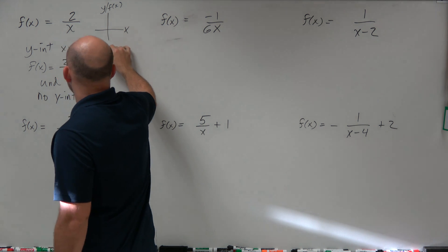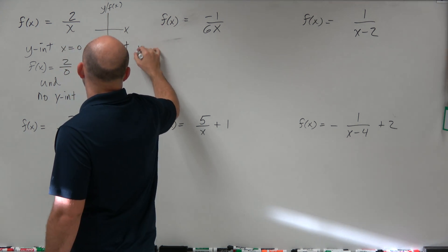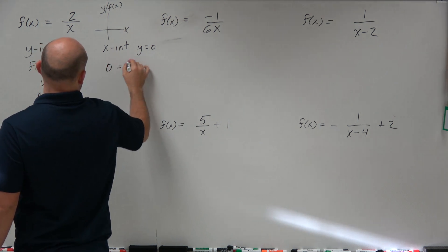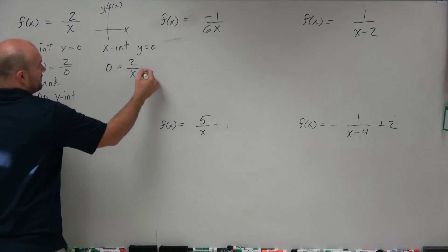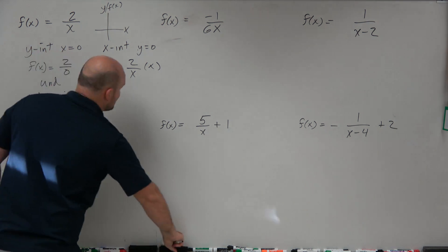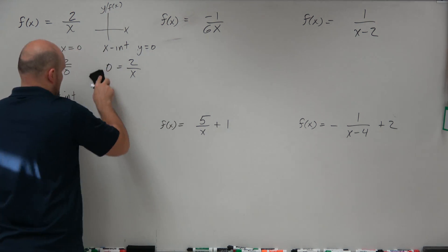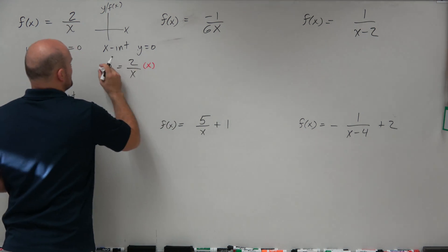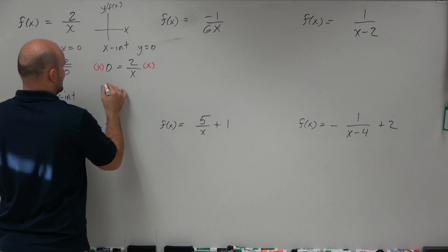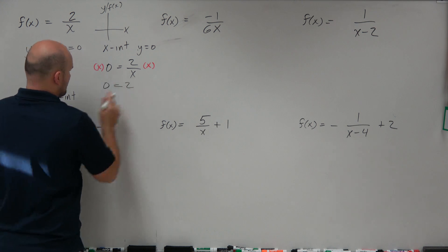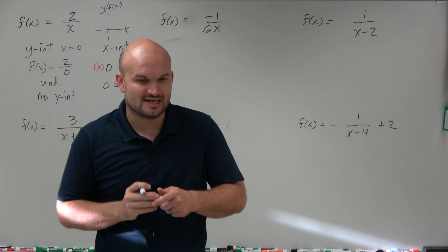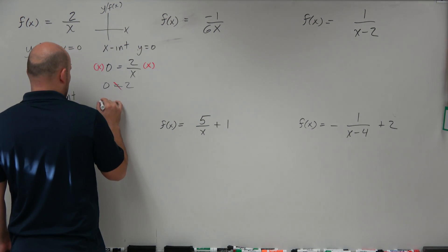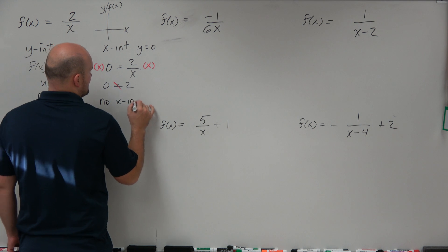Now for the x-intercept, that is when y is equal to 0. So I replace f of x with 0: 0 equals 2 over x. To solve for x, I multiply by x on both sides and get 0 equals 2. Well, 0 is not equal to 2, so since that is not a true statement, there is no x-intercept.